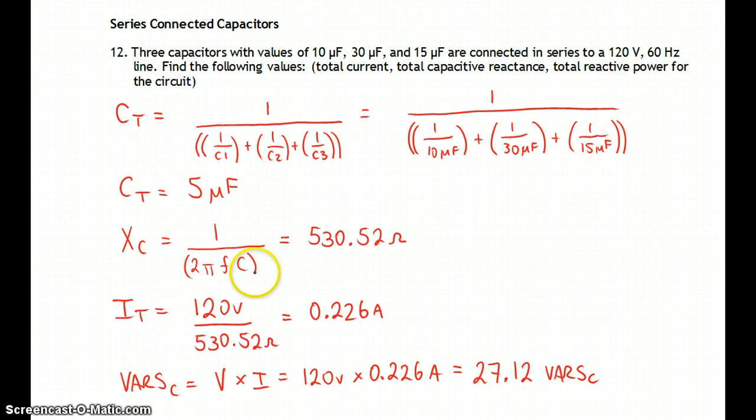Pump that into this equation here. 5 times 10 to the negative 6 times frequency at 60 hertz times 2 pi gives you 530.52 ohms. 120 divided by that reactance gives us 0.226 amps.